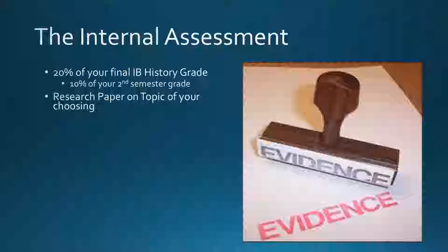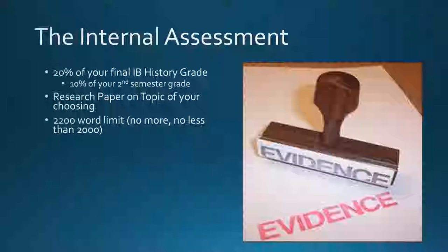In simplest terms, the internal assessment is a research paper on a topic of your choosing. I always suggest picking a history topic we cover in class since that provides necessary background, but if you're passionate about something historically related that we don't cover, that's totally okay as long as it fulfills the checklist and the components of a good question. The IA is 2,200 words — that is an actual hard limit. It cannot be more than 2,200 words; if it is, I have to stop reading.